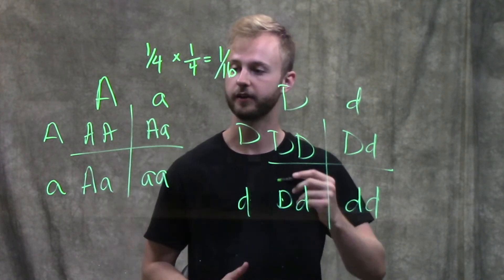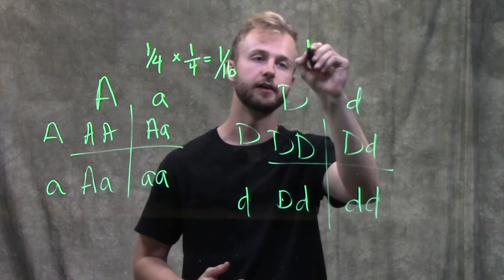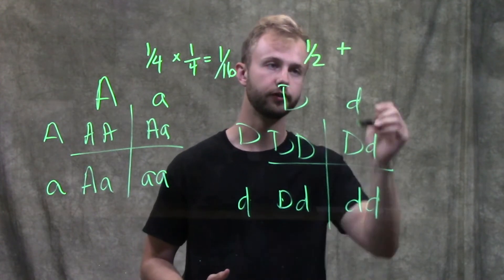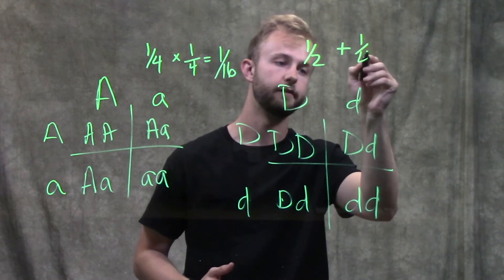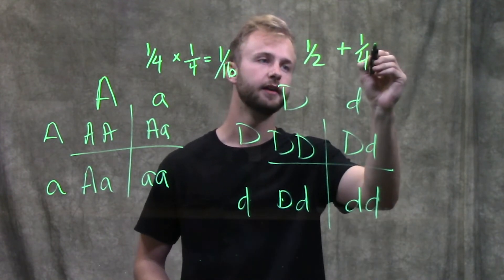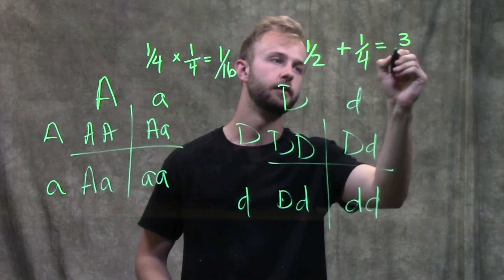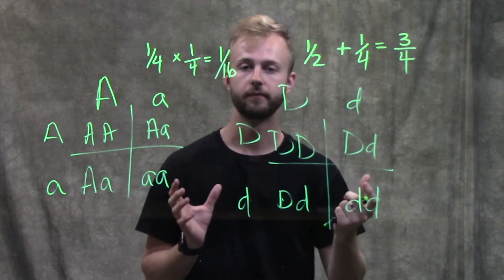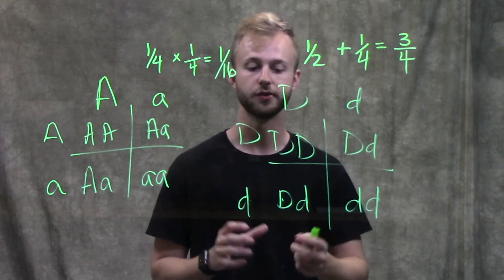For example, the probability of having big A and little a is one-half. We would add that to one-fourth, which is the probability of having little d, little d. That gives us three-fourths. That's how you use the addition rule when you have 'or.'